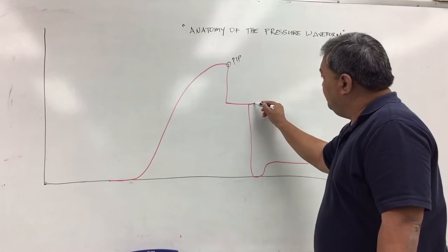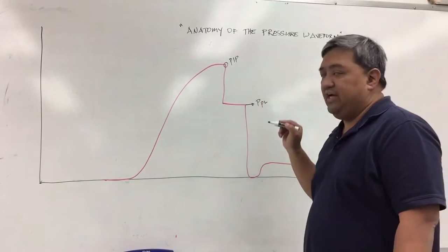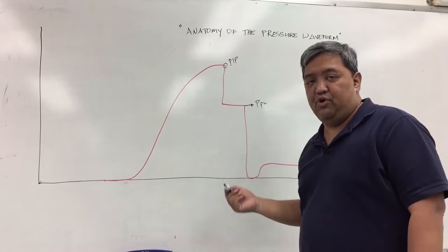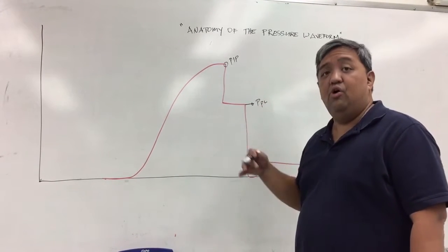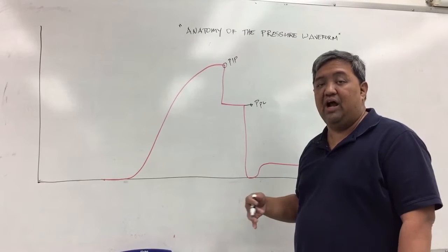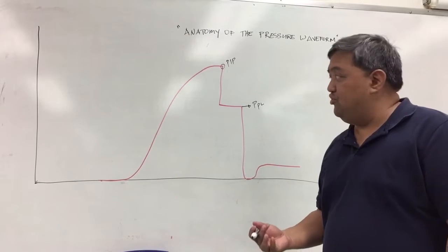Here is your plateau pressure. Again, in order to get the plateau pressure, you need to do an inspiratory pause or inspiratory hold. And that plateau pressure, also known as a static pressure or alveolar pressure, is the pressure needed to keep the lungs open without any air movement.